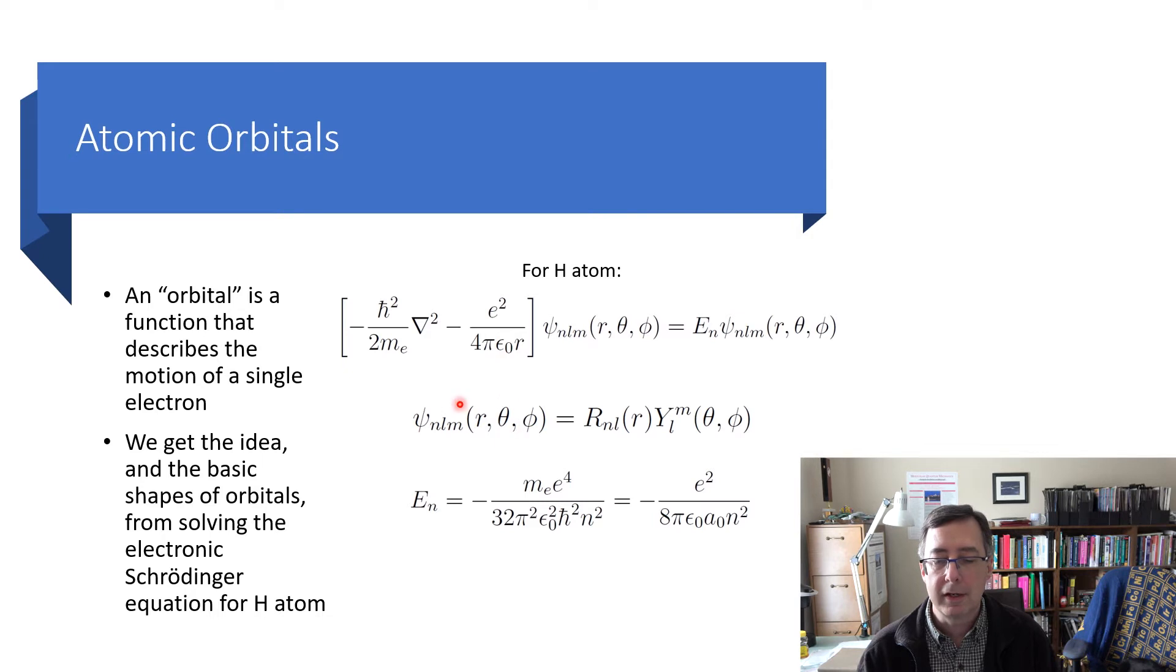And the wave function, I'm running it in spherical polar coordinates, so here we're invoking the Born-Oppenheimer approximation. We're freezing the nucleus, which is just a proton for a hydrogen atom, at the origin, and then we're solving for the motion of the electron around the nucleus. And so spherical polar coordinates seem appropriate.